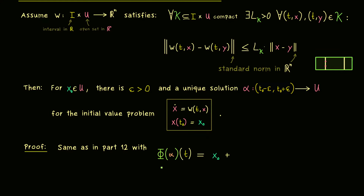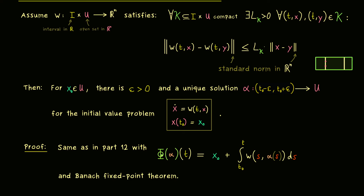You may remember the proof works with the Banach fixed point theorem and a suitable map phi. Now we just have to adjust phi to the new initial value problem: x0 plus the integral from t0 to t of w(s, α(s)) ds. That's the whole difference — before we had the vector field v and now we have the whole vector field w. You can just adjust the whole proof by using the new Lipschitz condition. This is the version of Picard-Lindelöf you should take as the general one.